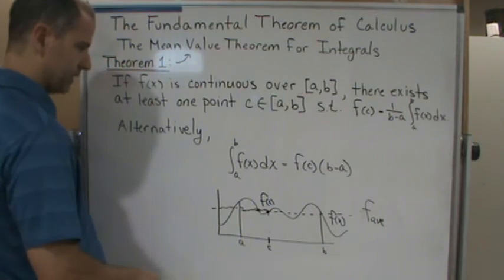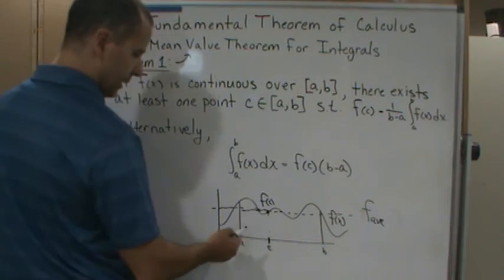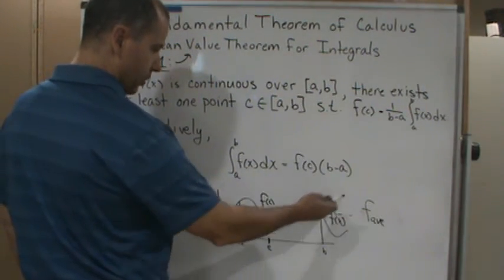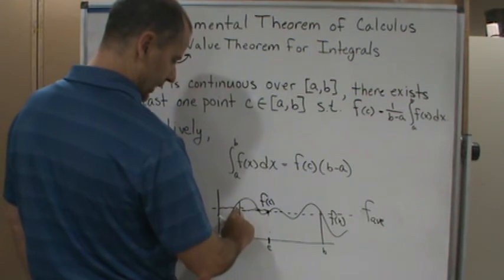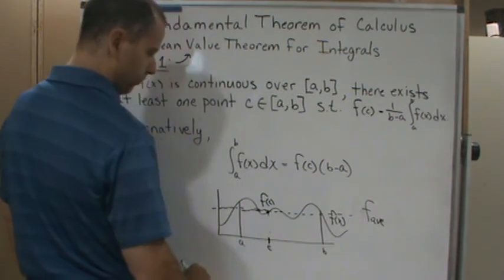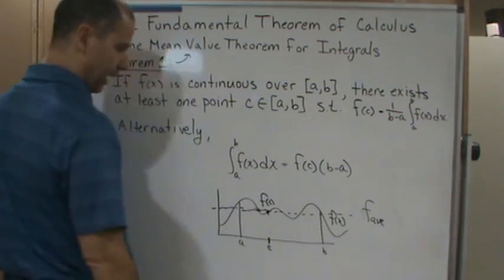You could think of it as a line because it's like a rectangle. So if you were to take all the highs and lows and take the average value of the function, you would get the same area from a to b if you just drew the rectangle, as opposed to taking all the highs and lows.